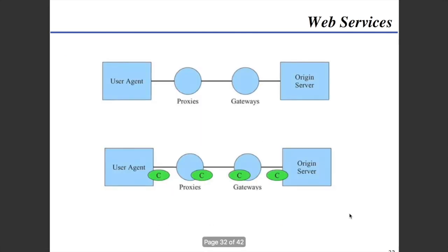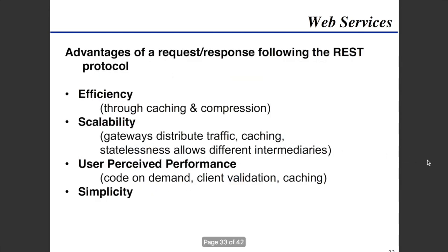Intermediaries may cache responses for performance. Basically, a request would be sent to the origin server and passed back to the user agent. Along the way, the response could be cached such that if you hit refresh and there was nothing actually to refresh, you'd hit your proxies and they would return the cached response — or even inside the local machine back to the web browser. Advantages include efficiency through caching and compression, scalability where gateways distribute traffic, and user-perceived performance through code on demand, client validation, caching, and simplicity.